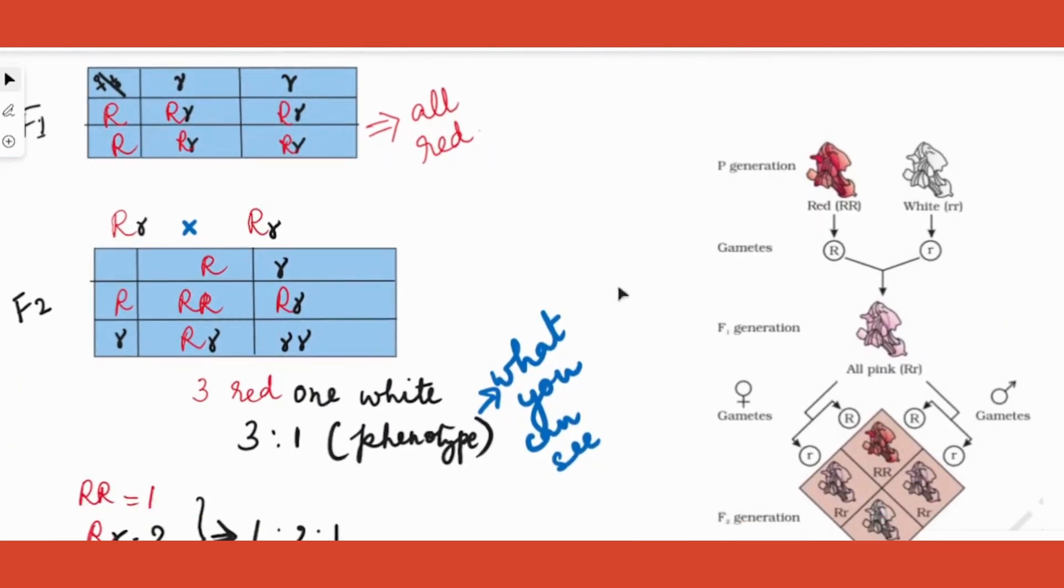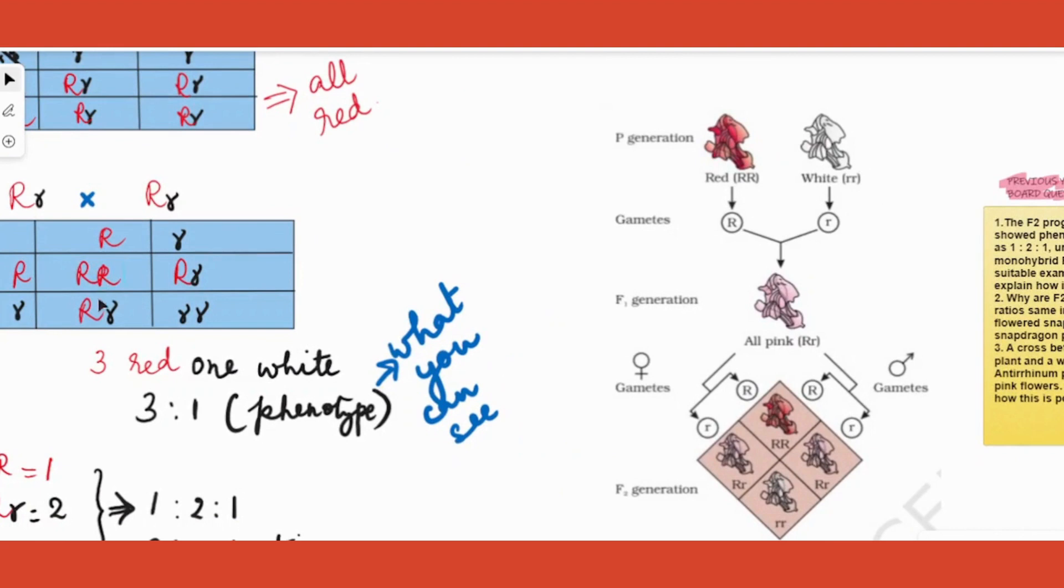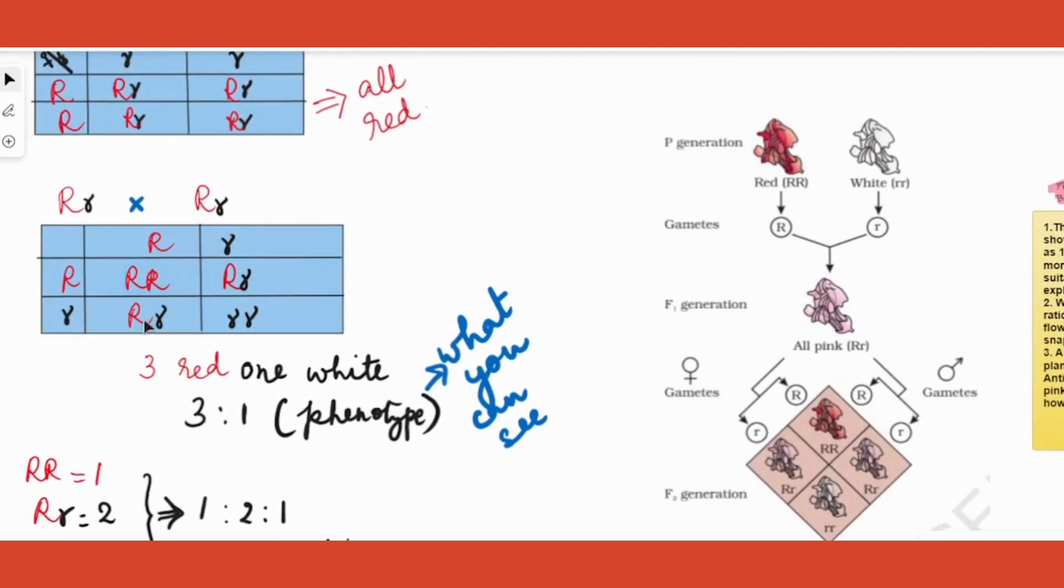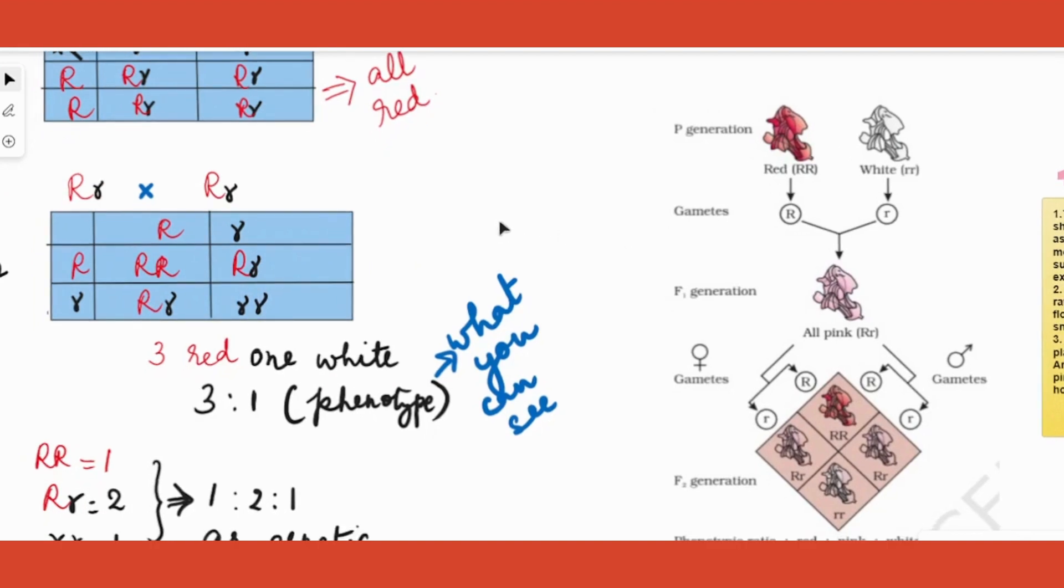If we self-pollinate them, we still get genotypically this ratio itself - capital R R and small r, capital R small r, capital R small r, capital R small r - the same ratio we get genotypically. However, with respect to phenotype, how would that be? You would find that this is red, this is pink, this is pink, this is pink, and this is white. So that means you would get a ratio of one is to two is to one. I would repeat - you know, typically you would get the same ratio, but when you look at it, it would not be the same.